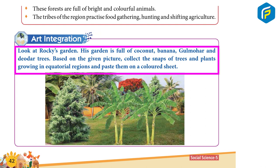Art Integration: Look at Rocky's garden. His garden is full of coconut, banana, gulmohar, and other trees. Based on the given picture, collect snaps of trees and plants growing in an equatorial region and paste them on a colored sheet.